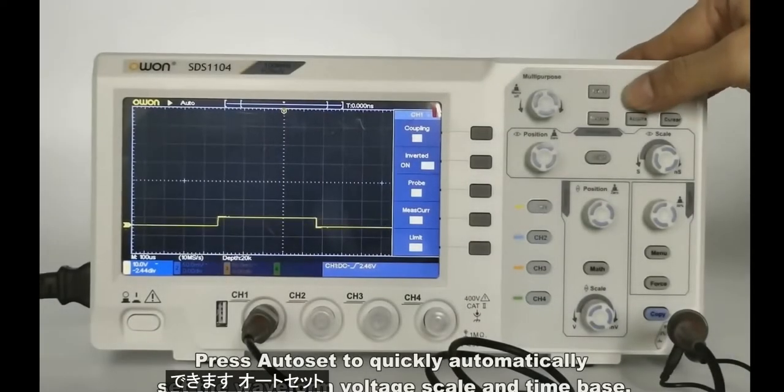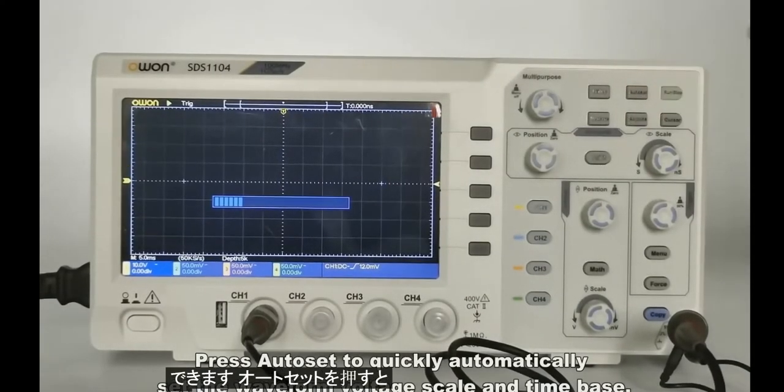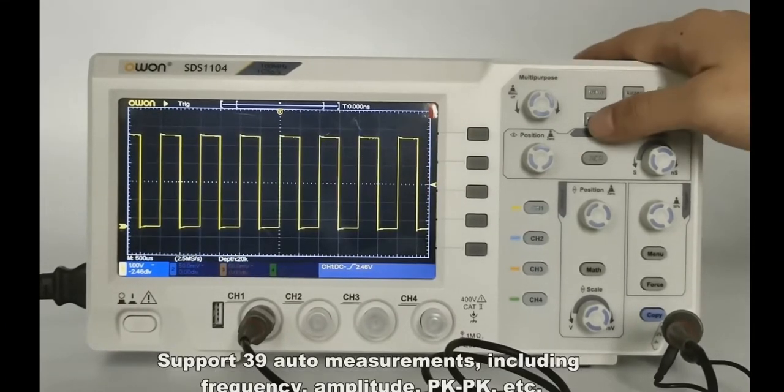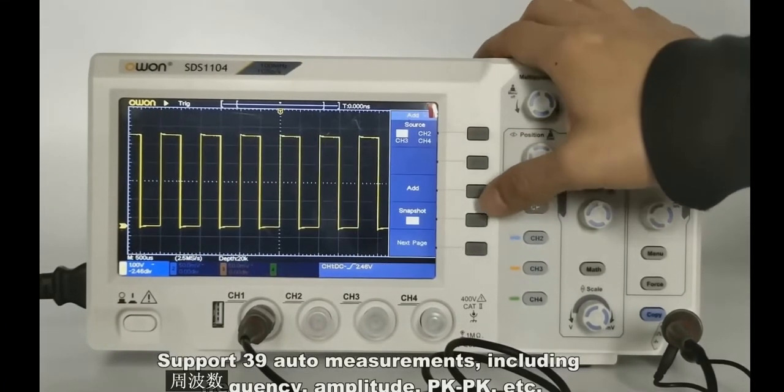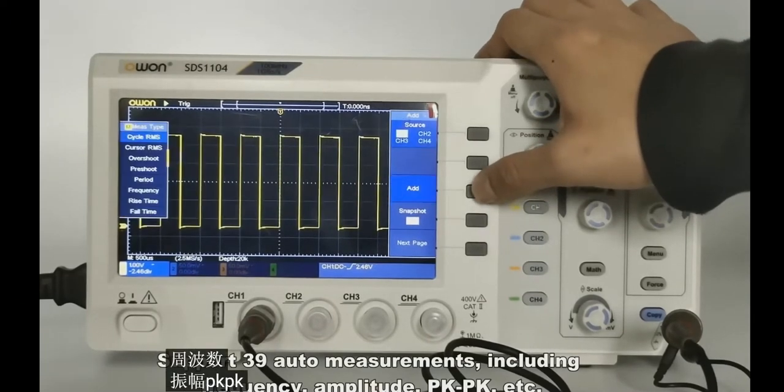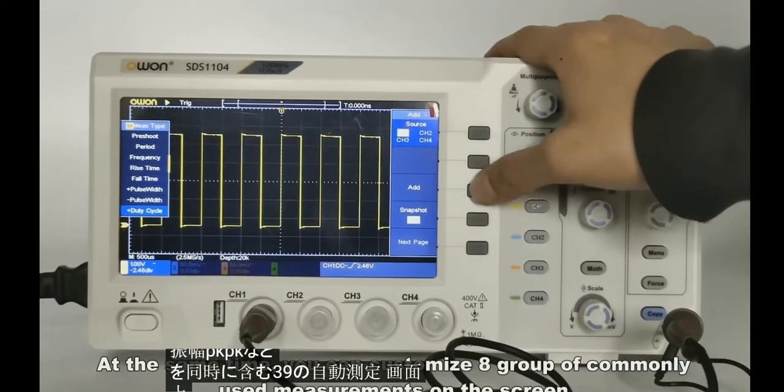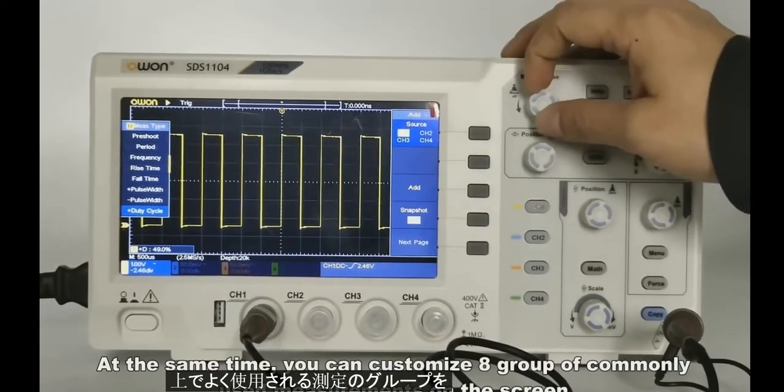Press Autoset to quickly and automatically set the waveform voltage scale and time base. It supports 39 auto measurements including frequency, amplitude, peak-to-peak, etc. At the same time, you can customize a group of commonly used measurements on the screen.